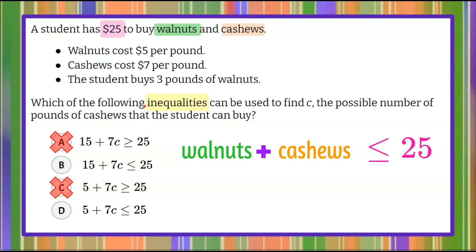Let's look at the rest of the information provided. We know that walnuts cost $5 per pound. And in this third statement, the student bought three pounds of walnuts. So three pounds of walnuts times $5 per pound is going to mean that the student spent $15 on walnuts. So we can replace walnuts here with $15.